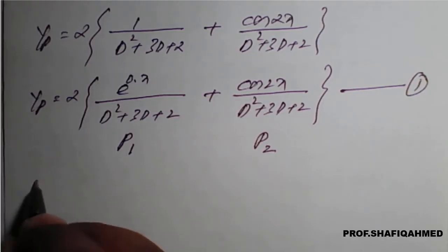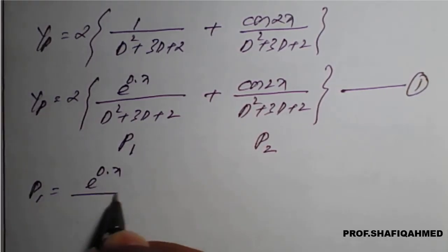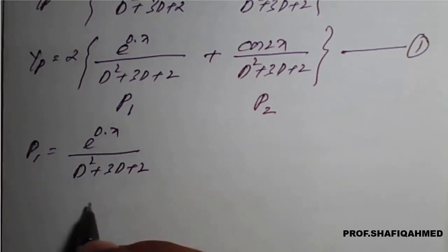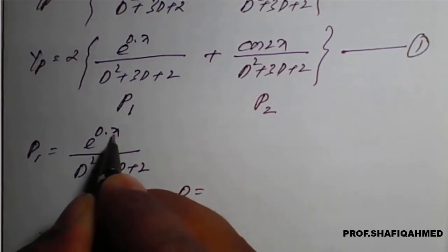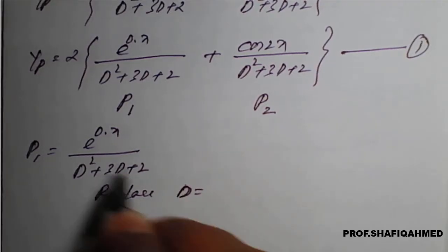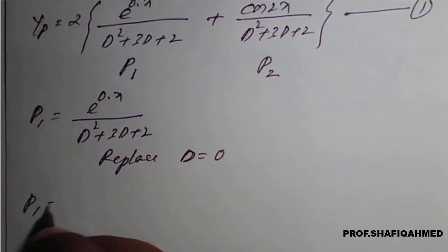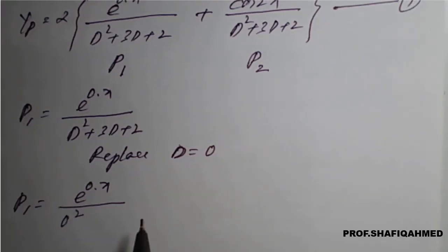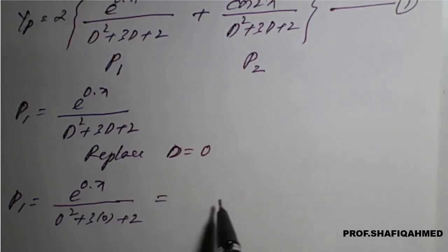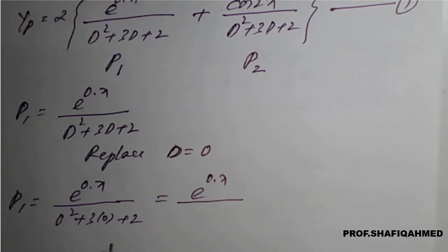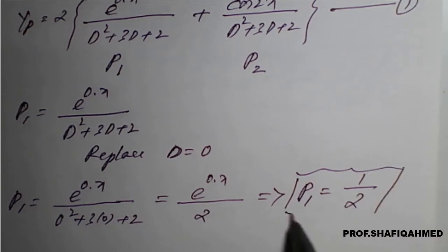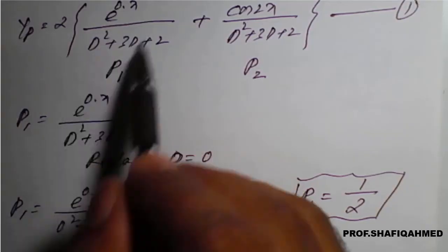P1 = e^(0·x) / (D² + 3D + 2). This belongs to type 1, so we replace D = 0 (the coefficient of x in the exponent). Substituting: D² = 0, 3D = 0, so the denominator becomes 2. Therefore P1 = e^0 / 2 = 1/2. The first particular integral value is 1/2.